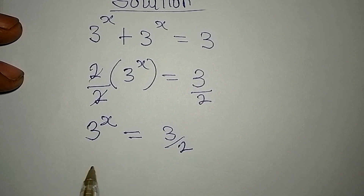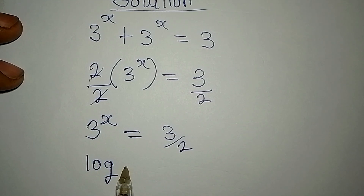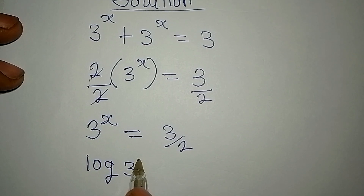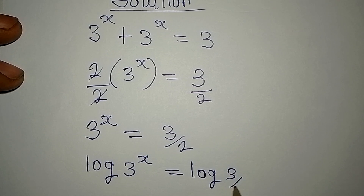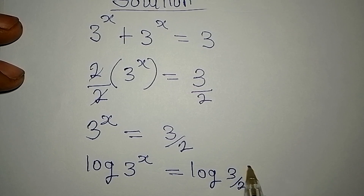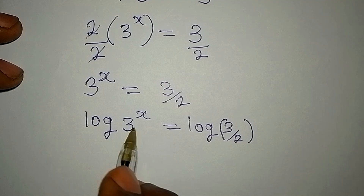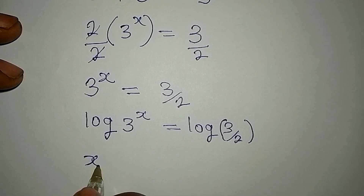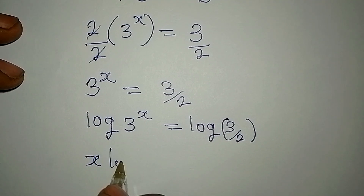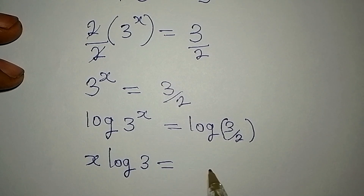We cannot express this to have the same base, so we'll take the log of both sides. Log of 3 to the power of x is equal to log of 3 over 2. Now the powers always come down in front, so we have x log 3.